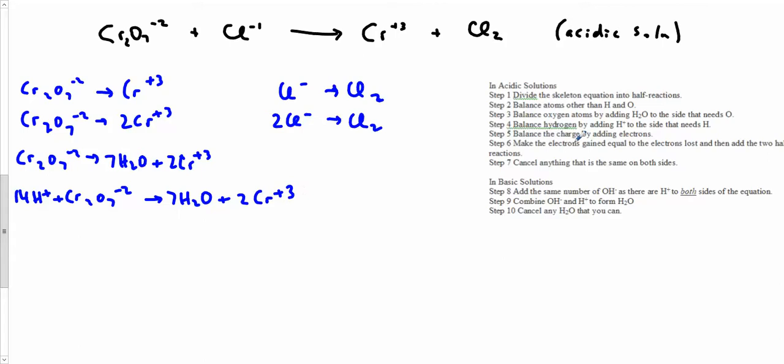Balance the charge by adding electrons. Step number five. So this guy, minus 2 is this side, so it looks like I need 2 Cl minus. Looks like I need 2 electrons on that side, and then both sides have a charge of minus 2.